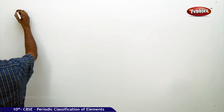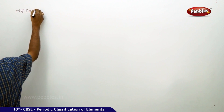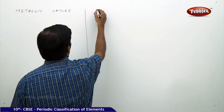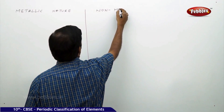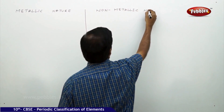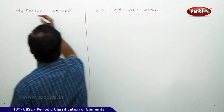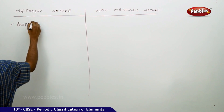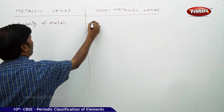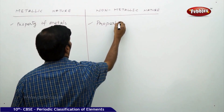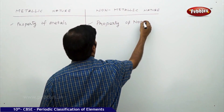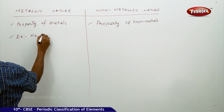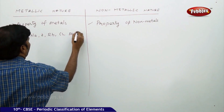The next part of the discussion is metallic nature and non-metallic nature. Metallic nature is the property of metals, and non-metallic nature is the property of non-metals. Examples of metals include sodium, potassium, rubidium, cesium, manganese, and so on.